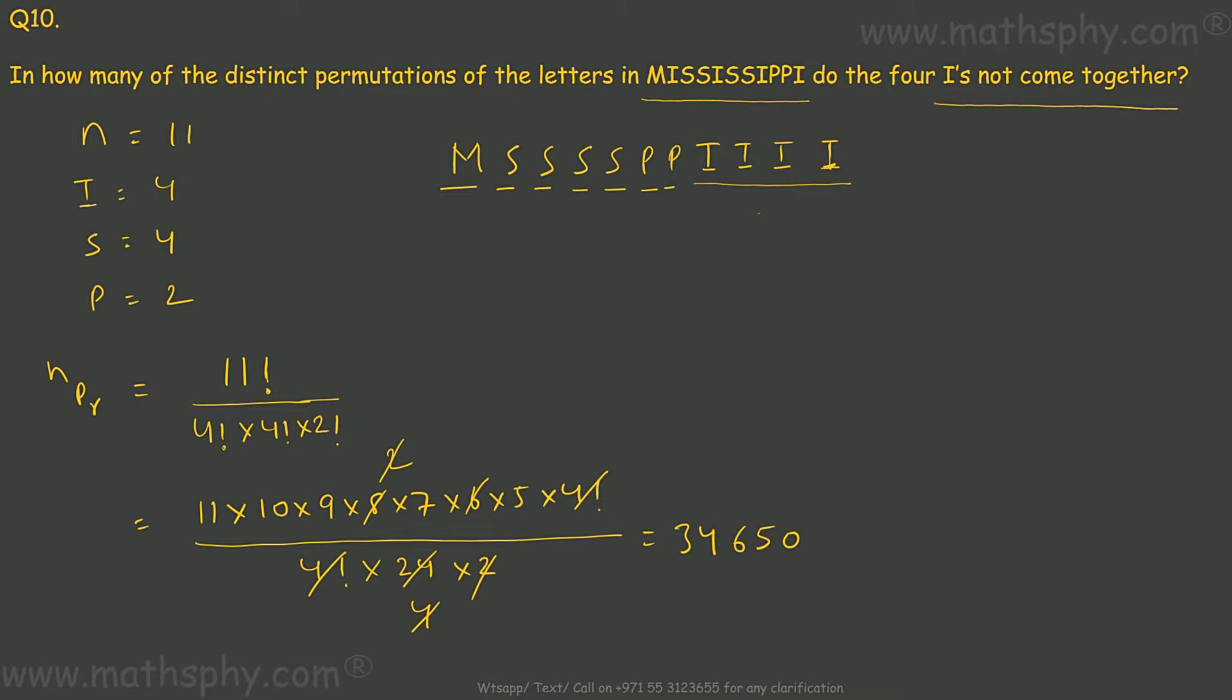This arrangement will be done in this manner. Now I have total N as 8. If I do arrangement for this, this arrangement can be done as, I will write NPR will be 8 factorial. And I have 1, 2, 3, 4, 4 S's together, and 2 P's together. Now these four I's will be considered as one letter, 840.